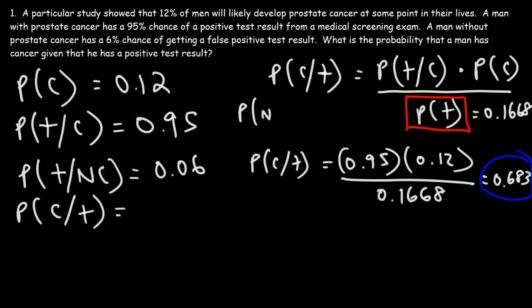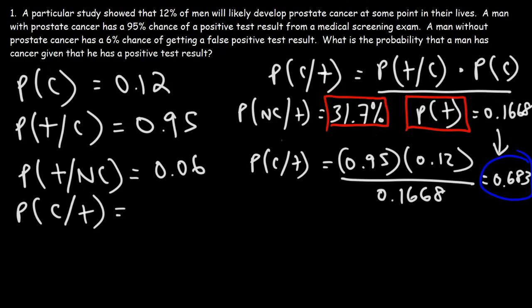So what is the probability that the person does not have cancer, even though they have a positive test result? That's 100% minus 68.3%, or 1 minus 0.683, which is 0.317. So there's approximately a 31.7% chance that even though the person has a positive test result, they do not have cancer. Sometimes, even if you get a positive test result, it doesn't mean you have that condition — there's always a risk factor. But the answer we're looking for is 68.3%.